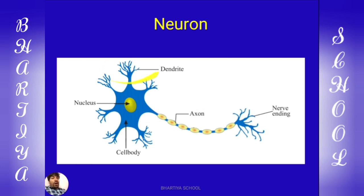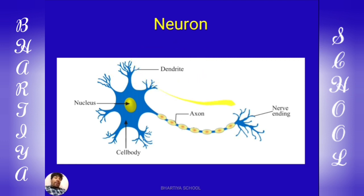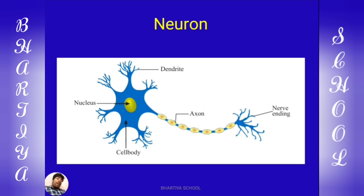Small processes arise from the cell body. The short processes that arise from the cell body are called dendrites. The single longest process that arises from the cell body is called axon.